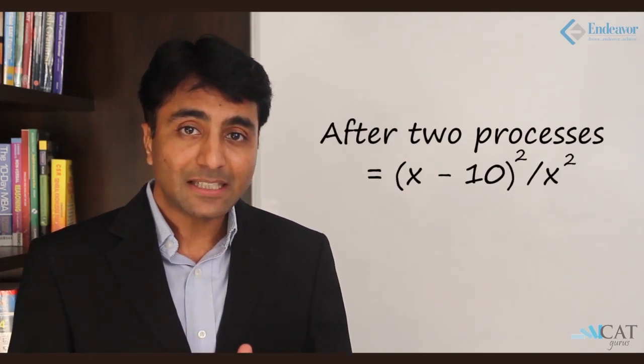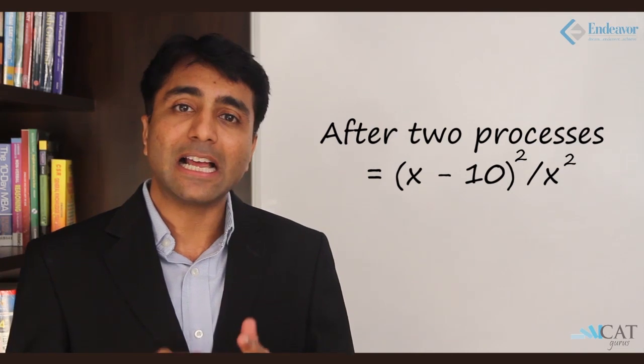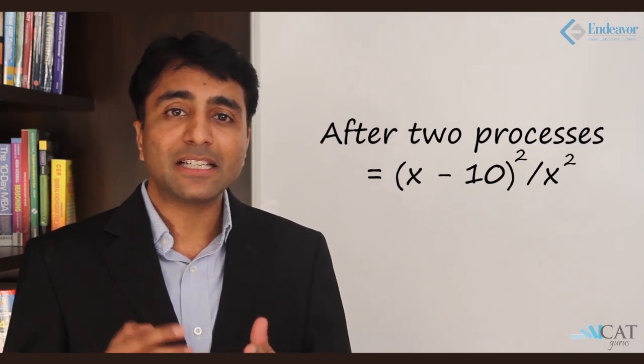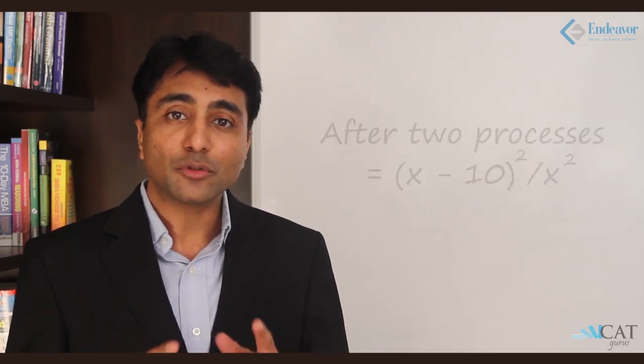Similarly, if my total quantity is x and I am removing 10 gallons, the proportion of wine left after the first process will be (x minus 10) upon x, and after the second process it will again be (x minus 10) upon x. Hence, after two such processes, I will be left with [(x minus 10) upon x] squared as the proportion of wine in the container.